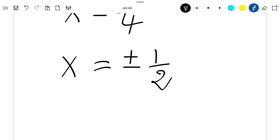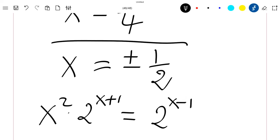So this is the solution to our equation x square times 2 power x plus 1 is equal to 2 power x minus 1. So thank you for watching the video. Please do not forget to subscribe to the channel. Thank you.